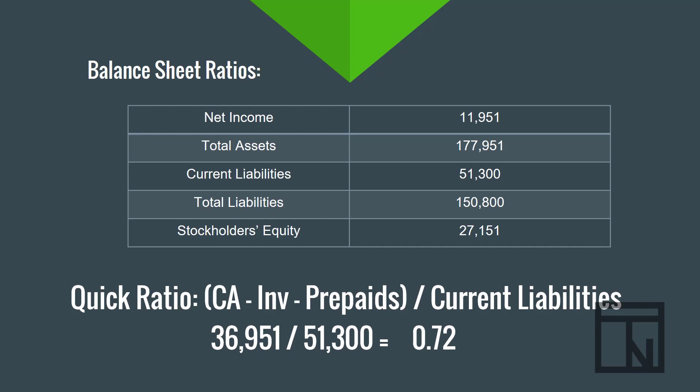So those are the three ratios we're looking at with the balance sheet. Combined with the two we learned from the income statement, those are five core financial ratios we can use to understand the health and growth of our company in comparison to other companies in our industry and over time.